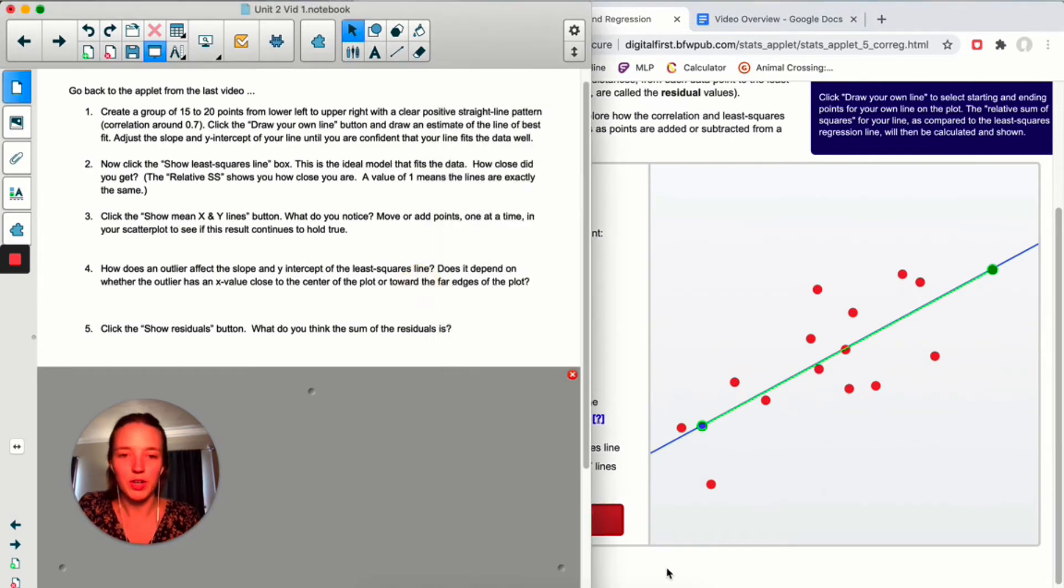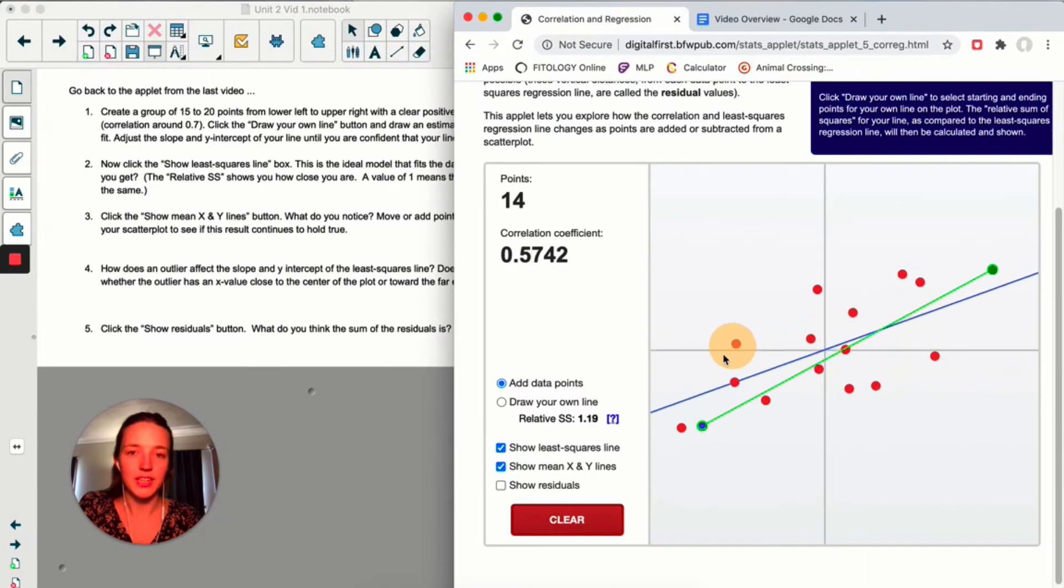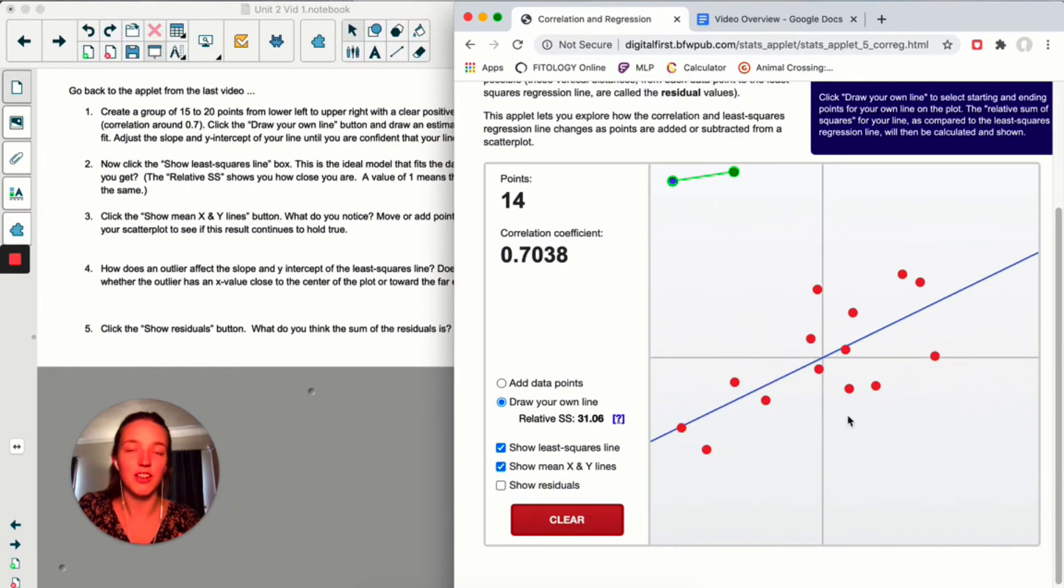Show mean x and y lines is next. So what this line is, is the mean of our x variable, and this line is the mean of our y variable. Now I can move some data points around, and that's going to change the correlation, and it's also changing the line. And you can see that no matter where I move this point, the mean of x and the mean of y is always a point on the least squares line, which is just kind of a cool thing about the least squares line. X bar, y bar, or the mean of x, mean of y, is always a point on the least squares line. Cool.